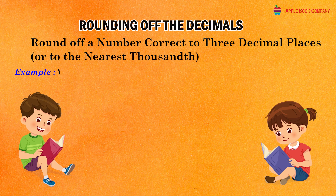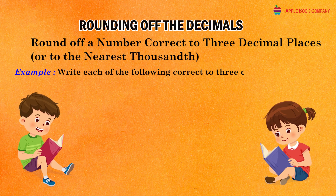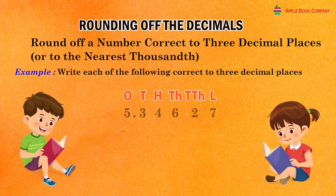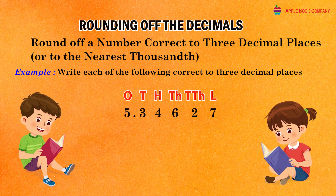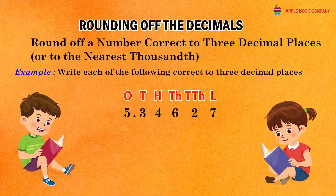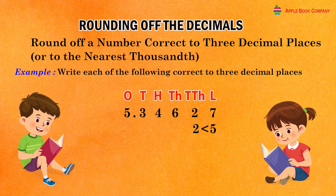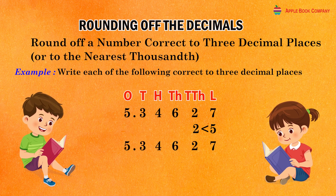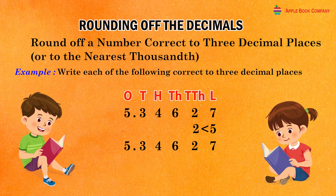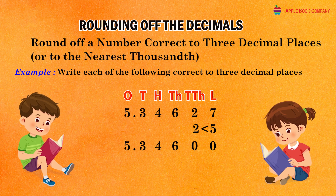Example: Write each of the following decimals correct to three decimal places. The given decimal is 5.34627. Here, the digit at the fourth decimal place is 2 which is less than 5. So, replace each digit right to the fourth decimal place and onward by zero and keep all the digits before the third decimal place as they are.